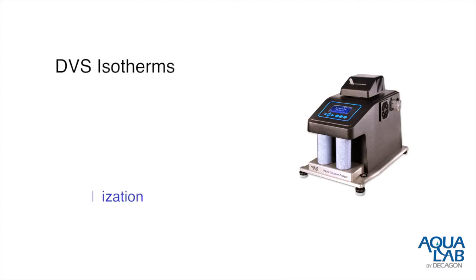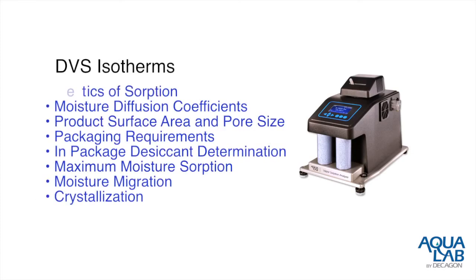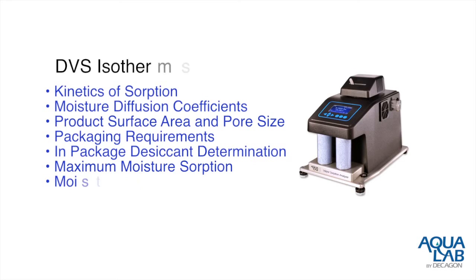With DVS isotherms, you can investigate kinetics of absorption, moisture diffusion coefficients, product surface area and pore size, packaging requirements, in-package desiccant determination, maximum moisture sorption, moisture migration, and crystallization.